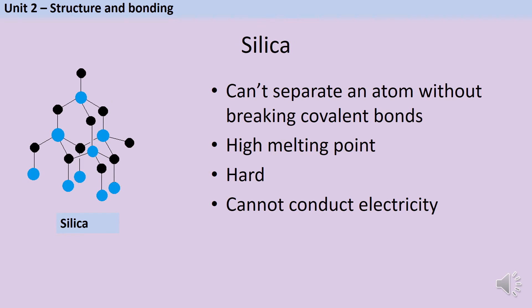Silica or silicon dioxide has many of the same physical properties as diamond. It has a high melting point, it's hard and it can't conduct electricity because like diamond it's a giant covalent structure and it's not possible to melt it without breaking all of those covalent bonds.